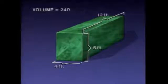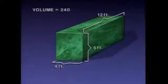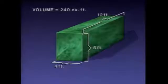The volume of this object can be calculated by multiplying four feet times five feet times five feet for a total of two hundred forty. Since the three length measurements are all in units of feet, the volume is expressed in cubic feet.